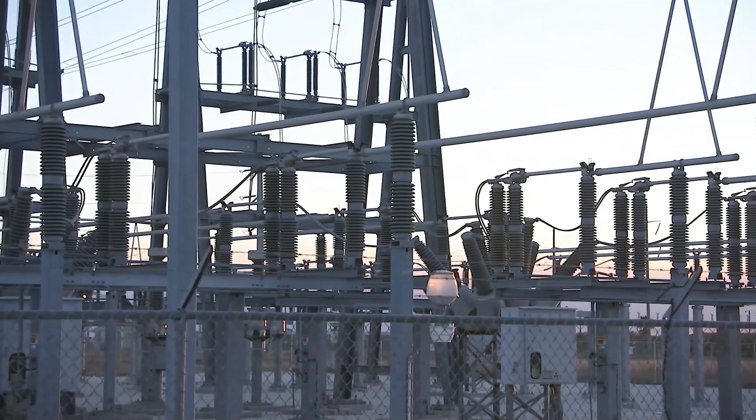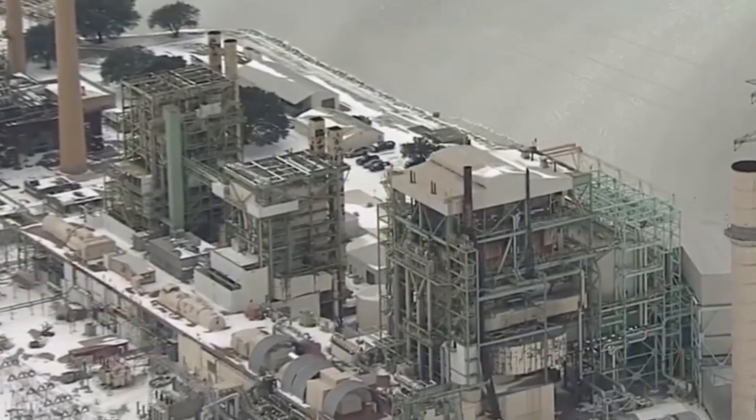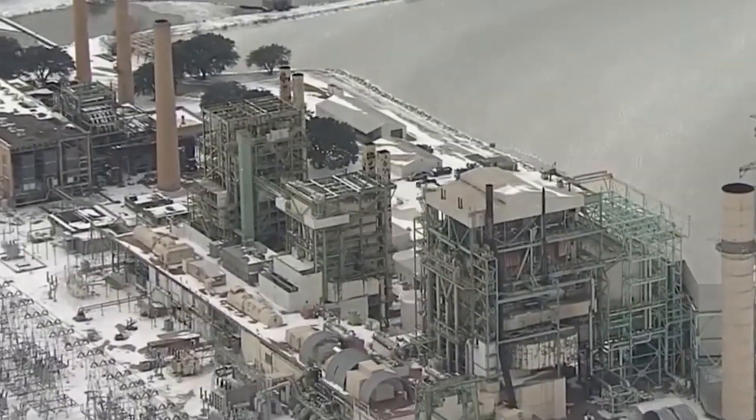A small piece of equipment, known as a lightning arrester, malfunctioned at a power plant in Odessa, Texas, causing part of the plant to trip offline.